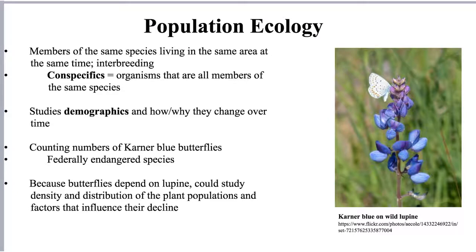As we broaden our scope up to the level of population ecology, we're looking at interactions between members of populations — members of the same species living in the same area at the same time, interbreeding with one another potentially, described as conspecifics. Conspecifics are organisms that are all members of the same species. Examples of things you can look at in population ecology are what we consider demographics.